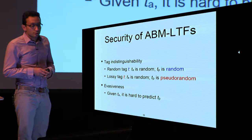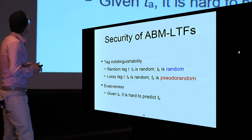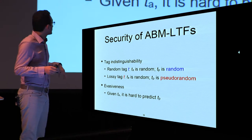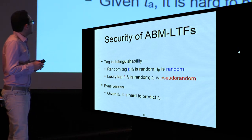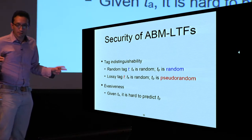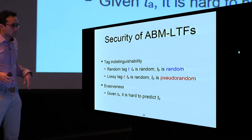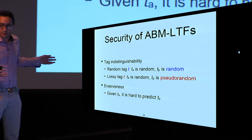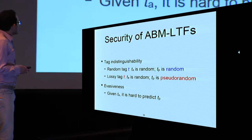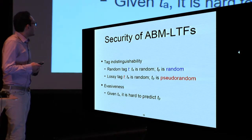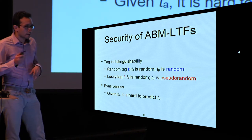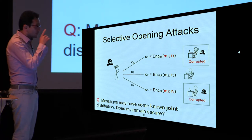What is achieved by these two constructions? Tag indistinguishability is achieved: in the injective mode the random tag T has both auxiliary and primary parts random, while in the lossy mode the auxiliary part is random but the primary part is pseudo-random by the methods described. Evasiveness is achieved by the fact that given the auxiliary part TA, it is hard to predict the primary part TP.